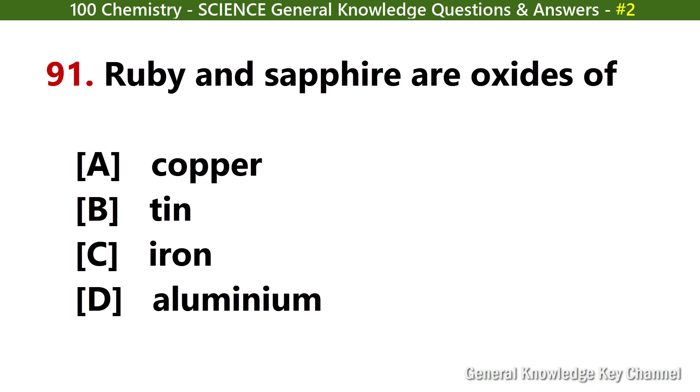Ruby and sapphire are oxides of? Answer D: Aluminium.